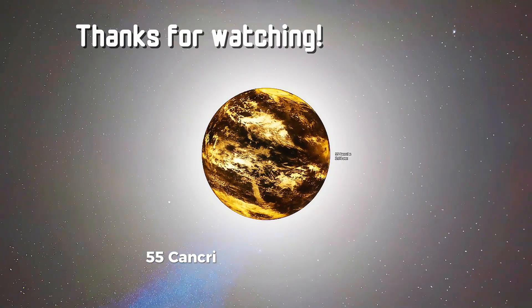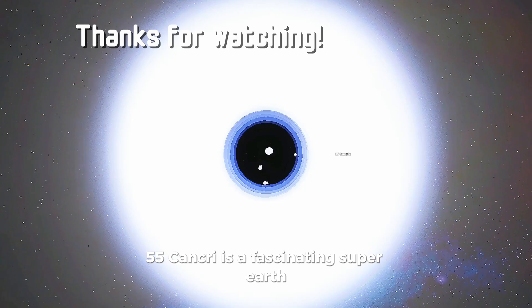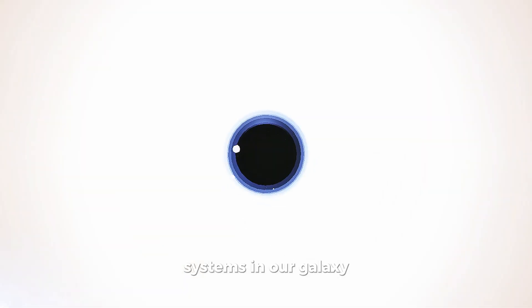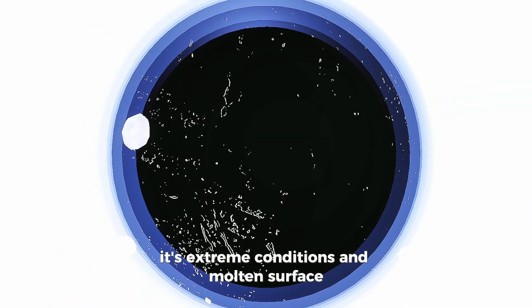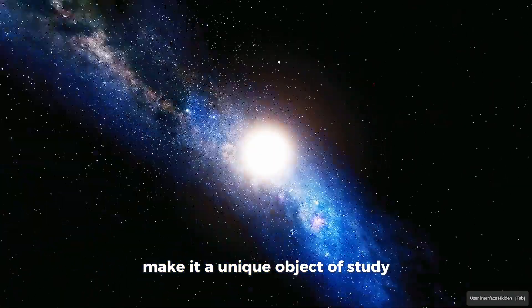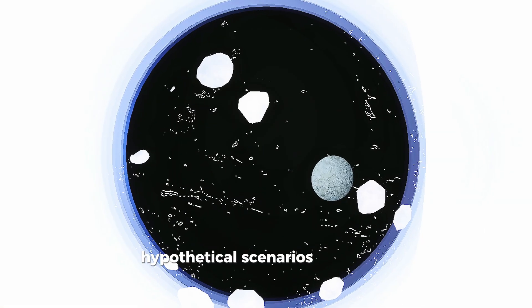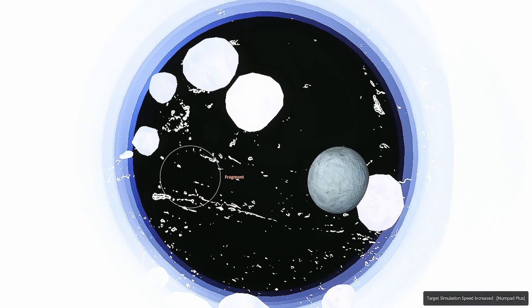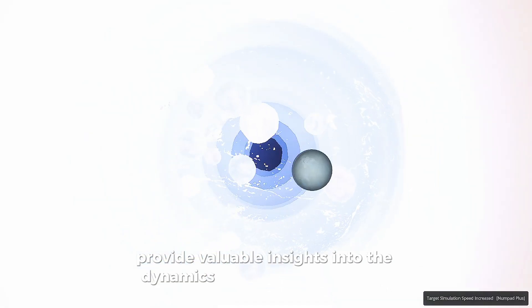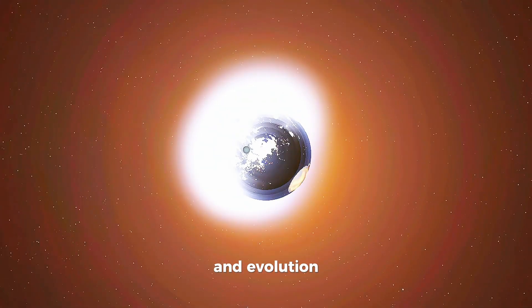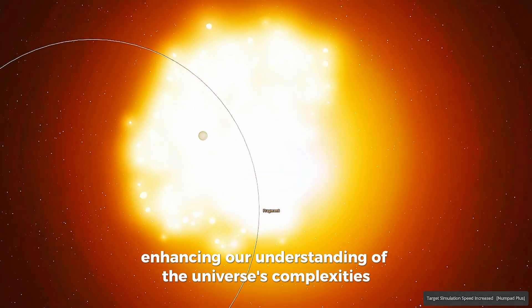55 Cancri E is a fascinating super-Earth, offering a glimpse into the diversity of planetary systems in our galaxy. Its extreme conditions and molten surface make it a unique object of study. Hypothetical scenarios, such as a collision with Venus, provide valuable insights into the dynamics of planetary formation and evolution, enhancing our understanding of the universe's complexities.